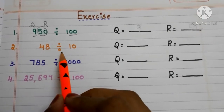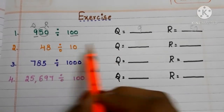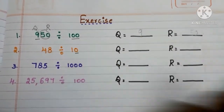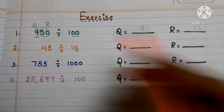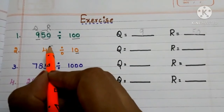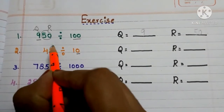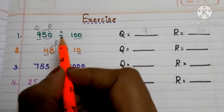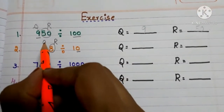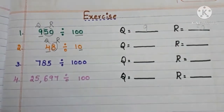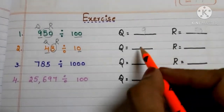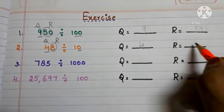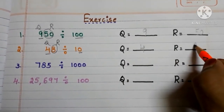Next one is 48 divided by 10. In 10, only one zero is there. So the last one digit becomes the remainder and the remaining digits become the quotient. The quotient is 4 and the remainder is 8.